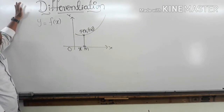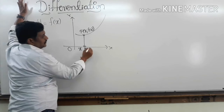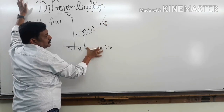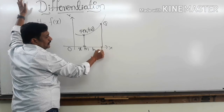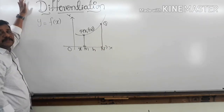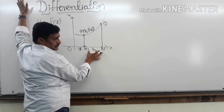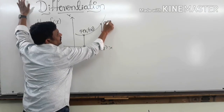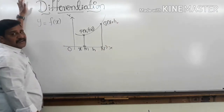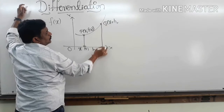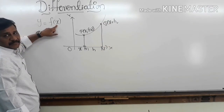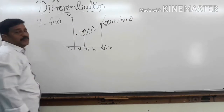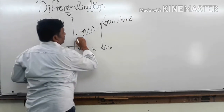Now, at a distance of h units from x, take another point Q on the curve. Drop a perpendicular QN on the x-axis — this distance is h units, so the x-coordinate of Q is x + h. Substituting x + h in place of x in the function gives f(x + h). So Q is the point (x + h, f(x + h)), and PQ becomes the chord.